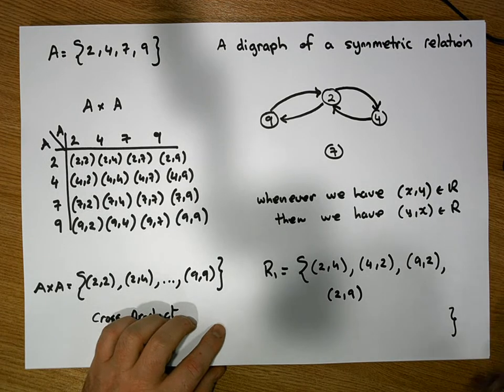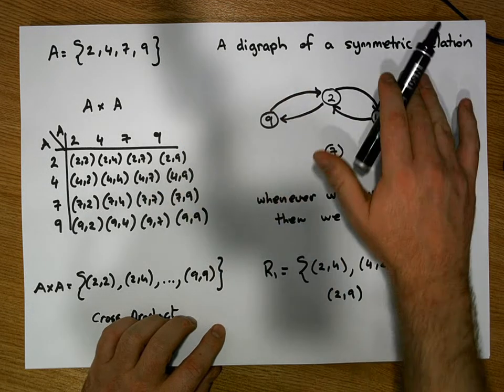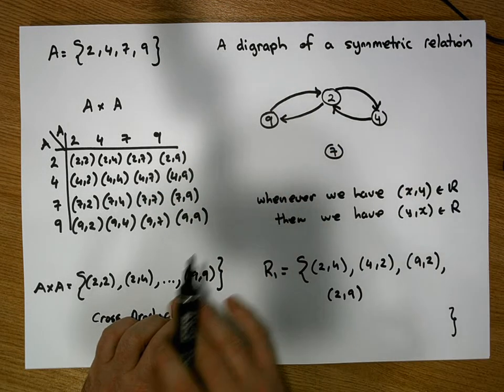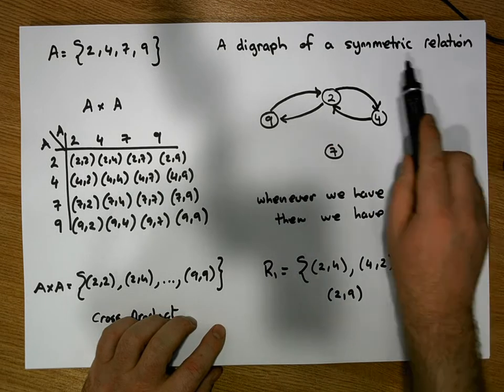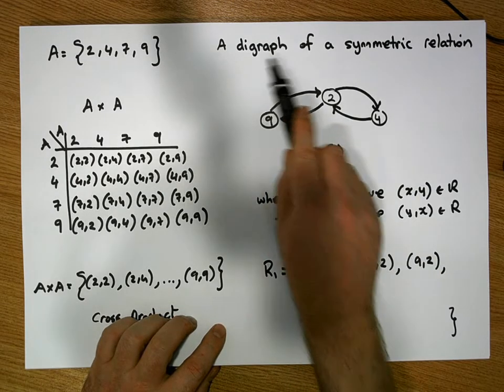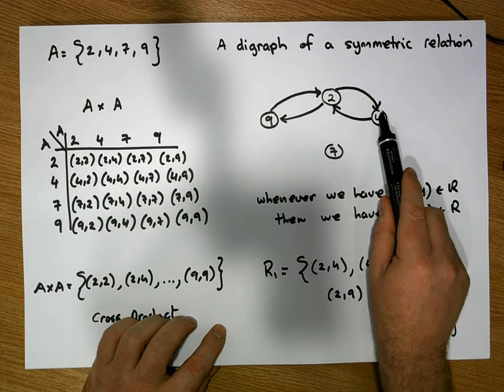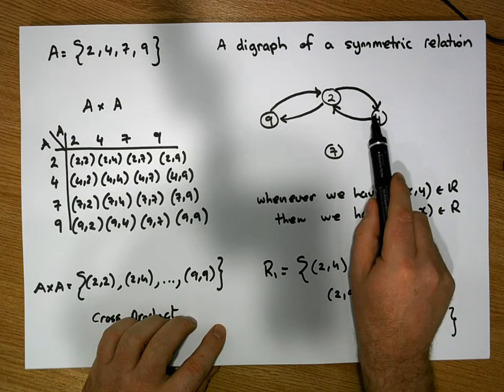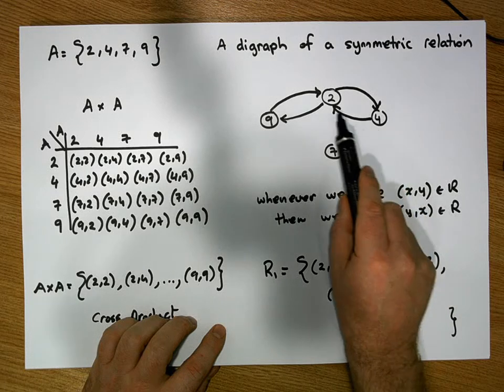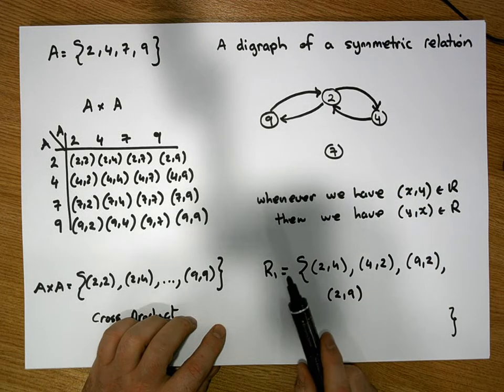But the most important thing is that for a digraph to be symmetric, in other words, for the relation to be symmetric that we're representing through a digraph, whenever you can take a hop from one node to another node, you should be able to take a hop back from that node to where you came from originally.